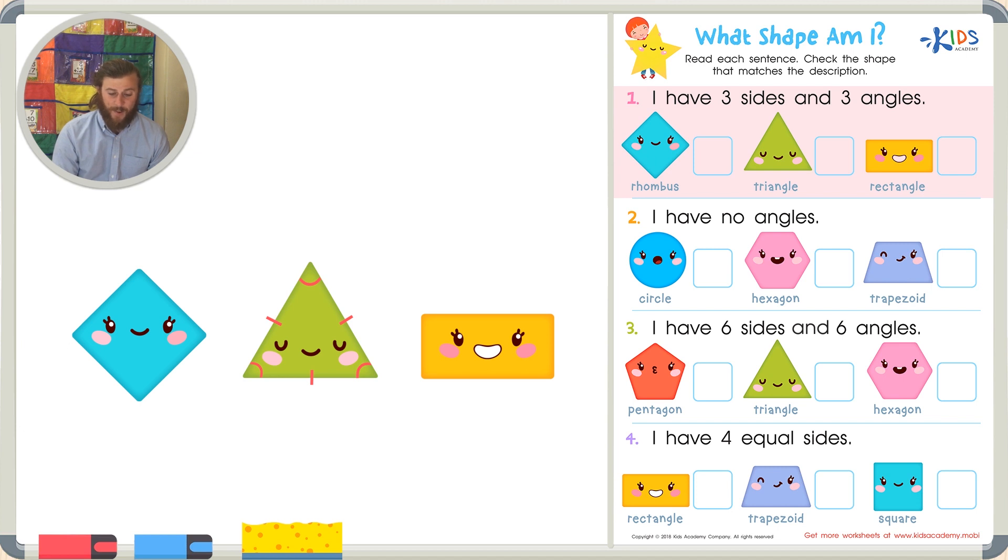Let's just quickly check the other shapes to make sure they also don't have three sides and three angles. In my rhombus there are one, two, three, four sides, so that can't be correct. And in my rectangle there are also one, two, three, four sides, so that can't be correct. So just to review, the shape with three sides and three angles is a triangle.